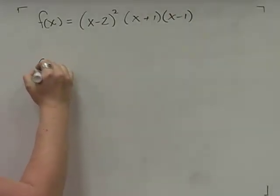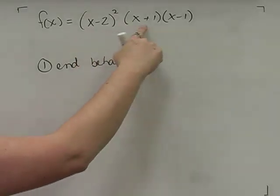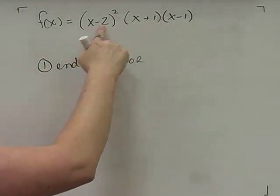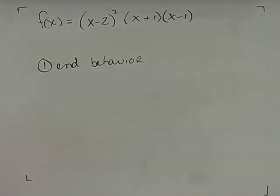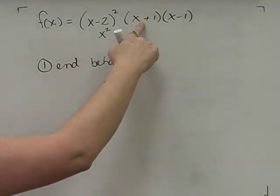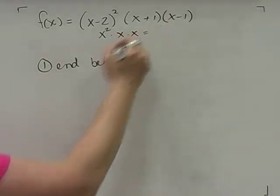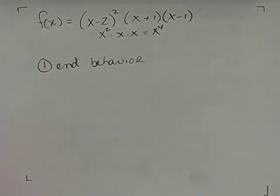When graphing polynomial functions the first thing I need to know is the degree of my polynomial so that I can find my end behavior — what happens to the ends of the graph as it approaches negative infinity and positive infinity. To find the degree, rather than multiplying everything out, I can see that (x minus 2) squared gives an x squared term, times x gives x cubed, times another x gives x to the fourth. So the degree n is 4.